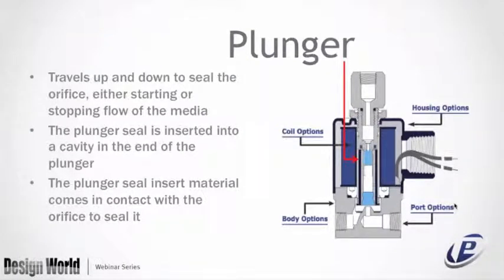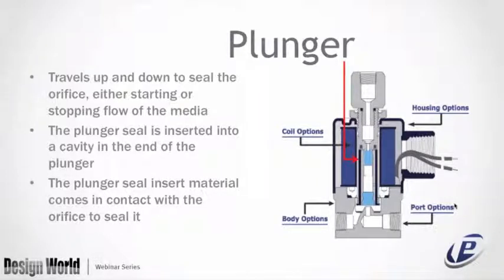A plunger travels up and down to seal the orifice, either starting or stopping the flow of the media. The plunger is inserted in the cavity and a plunger seal is inserted at the end of the plunger. The plunger seal insert material comes in contact with the orifice to seal it. This three-way valve has two Buna seals inserted in the plunger to seal the top and bottom of the orifice.